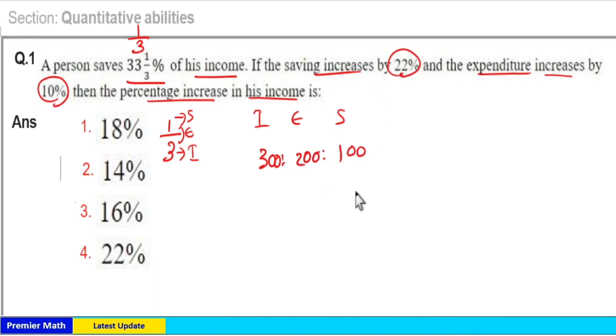Now savings increases by 22 percent, meaning a 22 percent increase on 100 equals 100 plus 22, which is 122 as the new savings. Expenditure increases by 10 percent, meaning a 10 percent increase on 200 is 20.